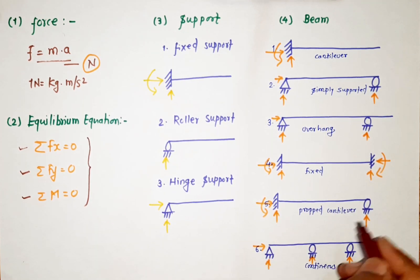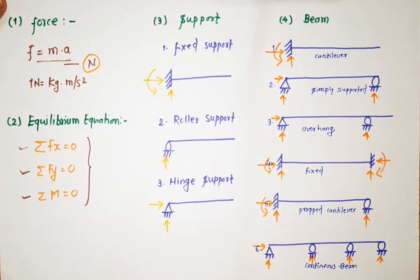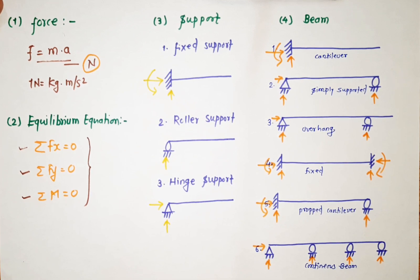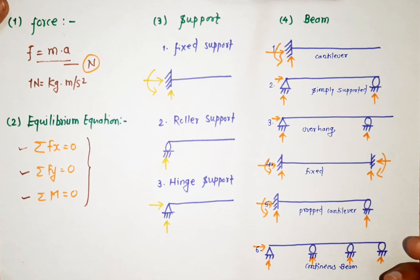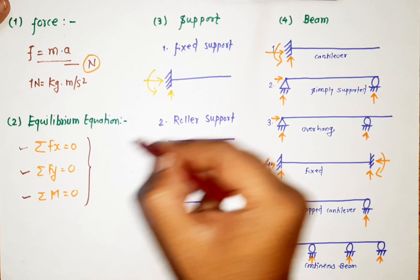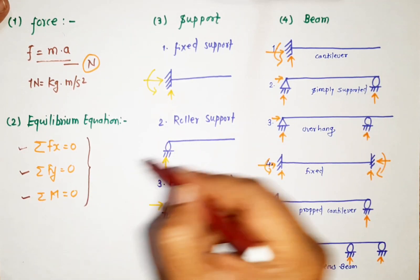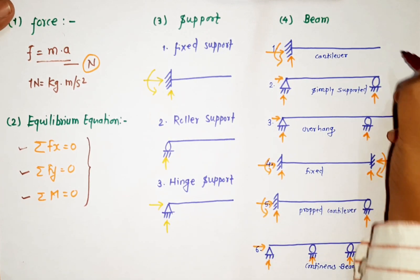When we calculate the number of unknowns: cantilever has three, simply supported beam has three, and overhang beam has three. Since we have three equilibrium equations, we can solve up to three unknowns. That means cantilever, simply supported, and overhang beams can all be solved using equilibrium equations.